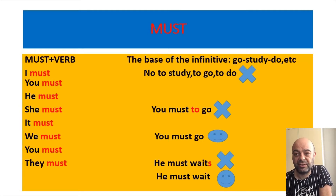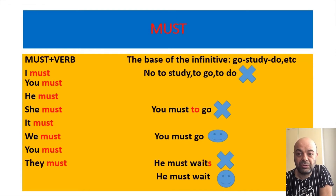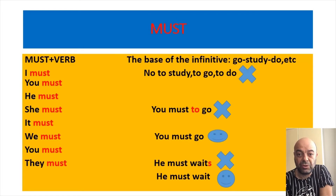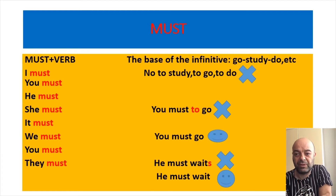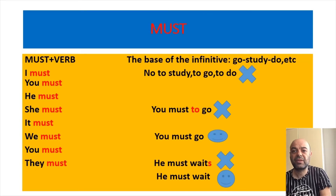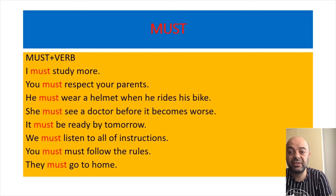The base form of the infinitive: go, study, do — no 'to study', no 'to go', no 'to do'. 'You must to go' is wrong. 'You must go' — yes, this is the correct one. 'He must to wait' is a wrong sentence. 'He must wait' — this is the correct sentence.